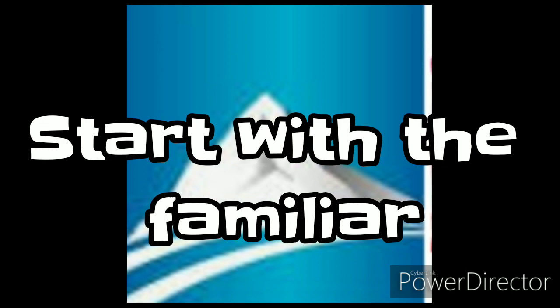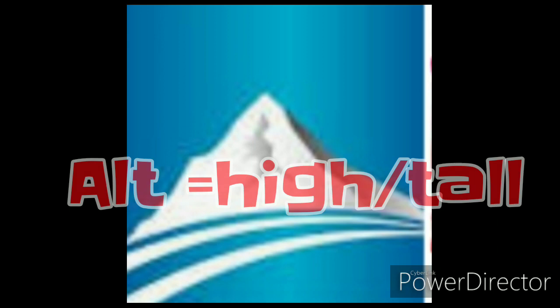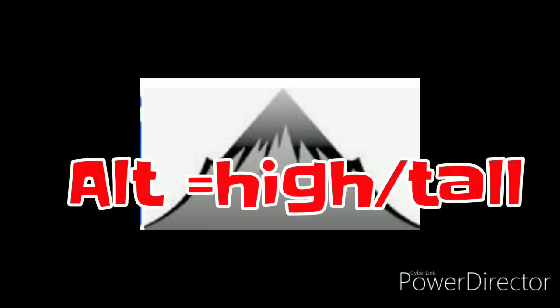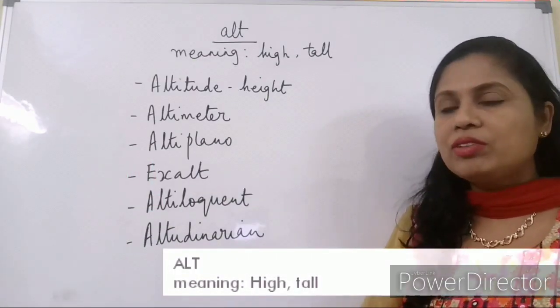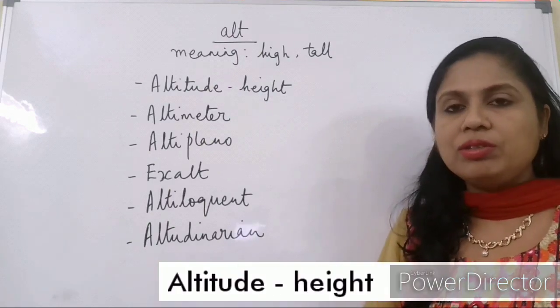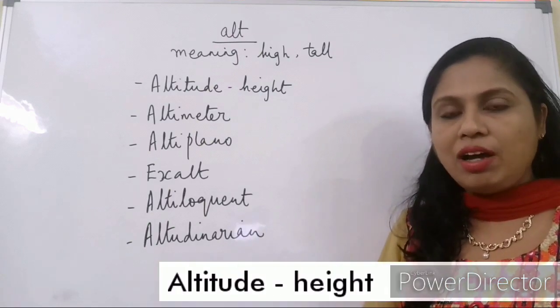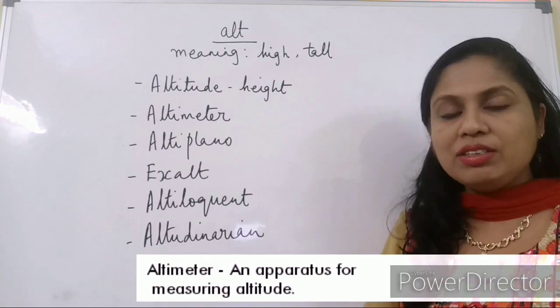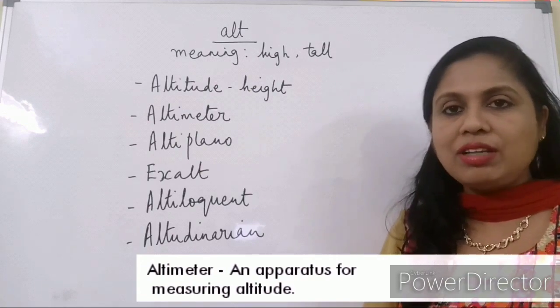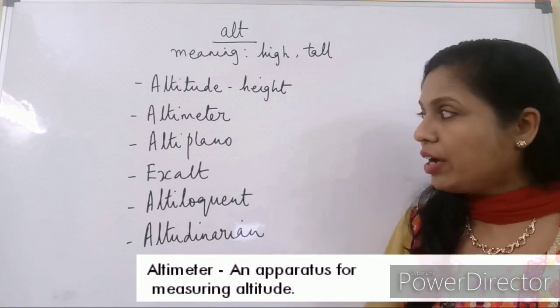The root word that I am going to teach today is ALT, which means high or height. You will be amazed to see how many words can be made out of this simple root. Altitude means height. Altimeter is a device that is used to measure height.